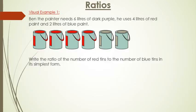Right, let's go over some examples, a visual example of ratio. So Ben the painter needs six litres of dark purple. He uses four litres of red paint and two litres of blue paint.